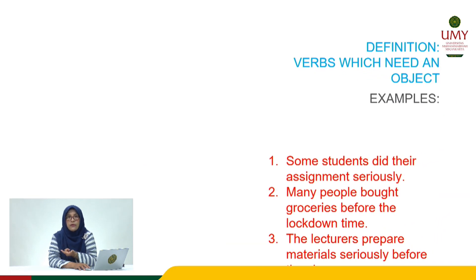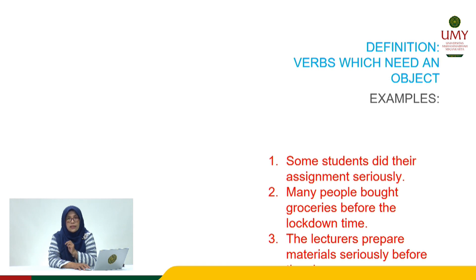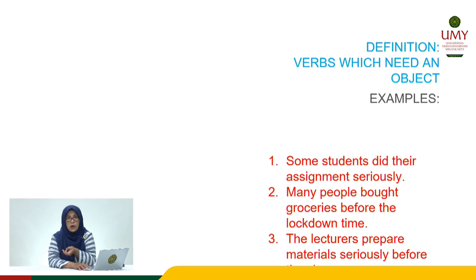What is a transitive action verb? A transitive action verb means a verb which needs an object. Here are the examples. 'Some students did their assignment seriously' — the verb 'did' needs an object, 'their assignment.' In sentence number two, 'Many people bought groceries before the lockdown' — the verb 'bought' needs an object, 'groceries.'